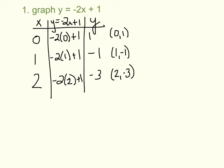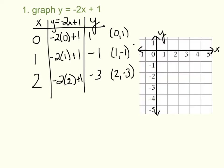Now I'm going to graph these. Notice when you graph, I have arrows at the end and I've labeled my x and y axes. If I graph these points — 0, 1 is right here; 1, negative 1 is right here; 2, negative 3 is right here — we just made ourselves a line. Notice you are not connecting the dots; you are drawing a line through the points with arrows at the end.